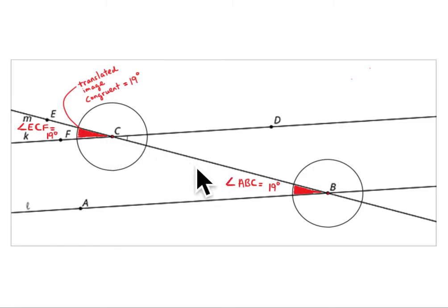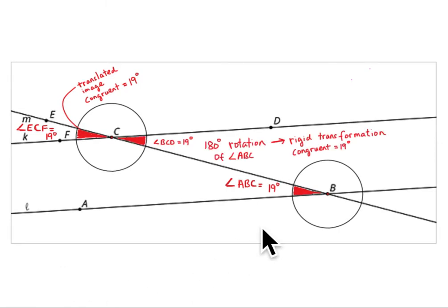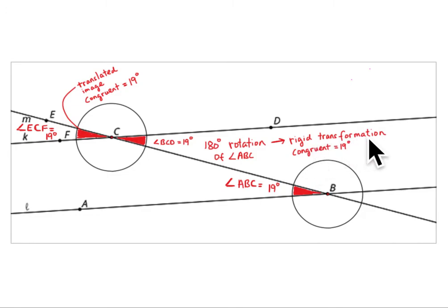One way is to understand alternate interior angles; the other way is vertical angles. To summarize: a 180 degree rotation of angle ABC is a rigid transformation, it's congruent, and it equals 19 degrees.